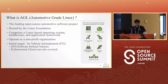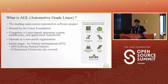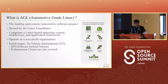What is AGL? This year I have many questions from outside AGL members, especially from other communities. The term AGL is unclear to some people. AGL is a leading open source automotive software project, hosted by the Linux Foundation. It is comprised of a Linux-based open source operating system, middleware and application framework. It operates as a non-profit organization. The initial target was IVI, and right now we also focus on SDB and IC instrument cluster.